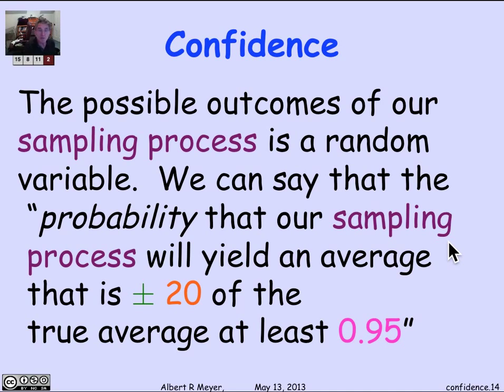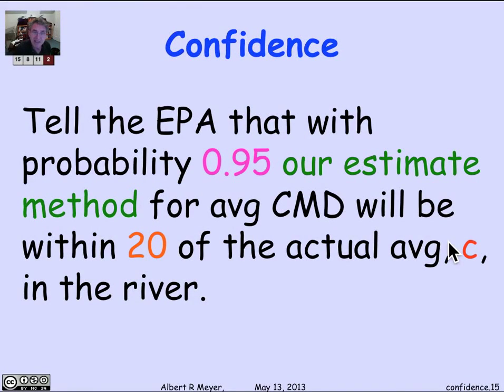The right thing we can say is that the possible outcomes of our sampling process can be modeled as a random variable. The probability that our sampling process will yield an average within 20 of the true average is at least 0.95. You tell the EPA: we don't know what the real average is, but we have a process that gets the right answer 95% of the time to within plus or minus 20, and we measured it. Our process that's right 95% of the time came in with an answer that said it's less than 200.